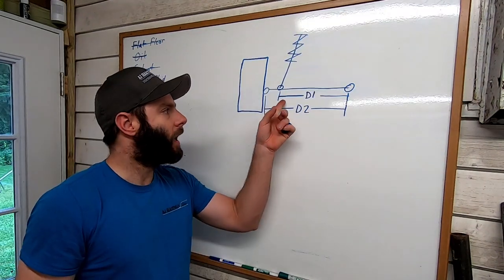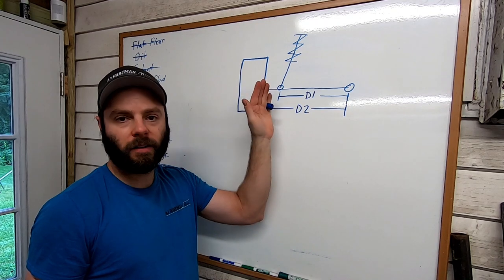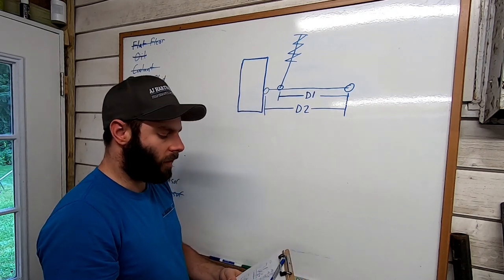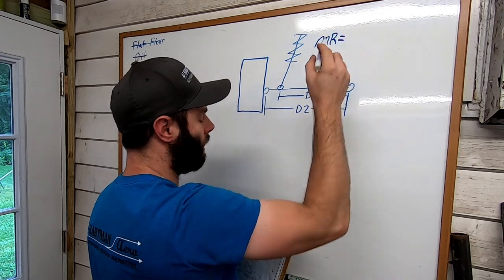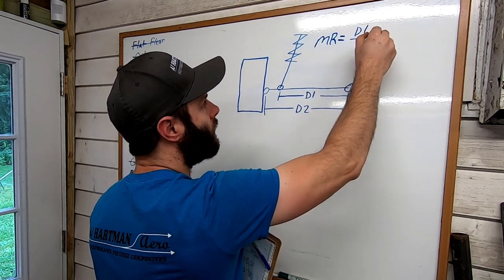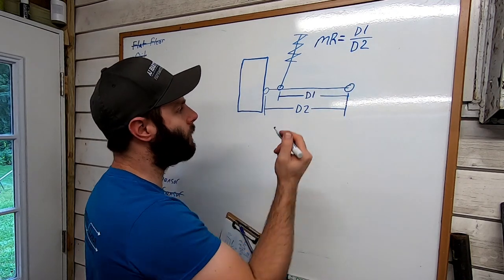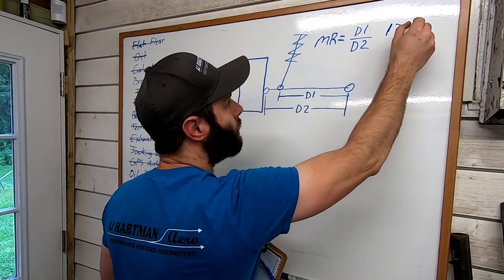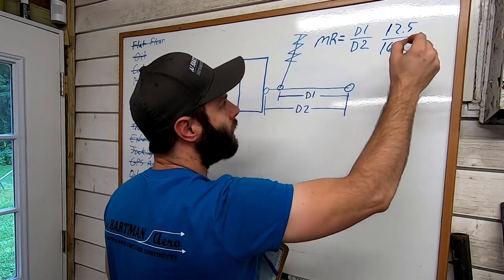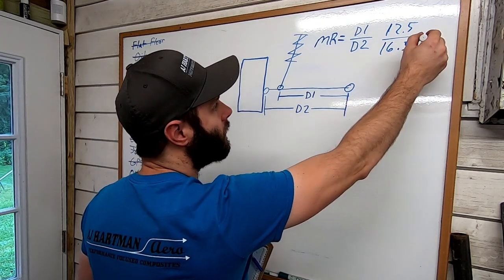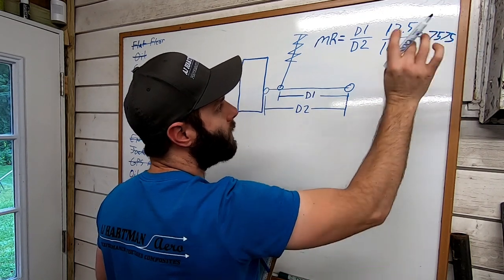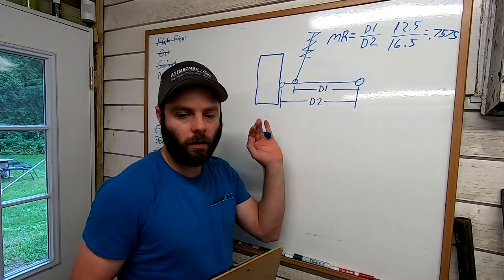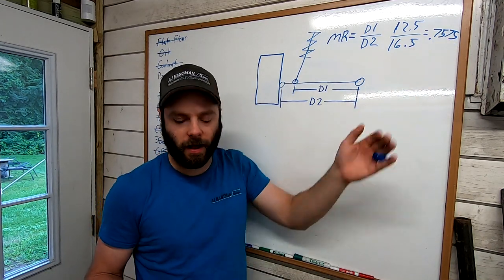All right, so here we have a drawing of an IRS suspension. Here's the inner pivot, here's your outer ball joint, and where the spring attaches. The equation for the motion ratio is D1 divided by D2. Pretty simple. In my case it is 12.5 divided by 16.5, so my motion ratio is 0.757, we'll say 0.758. So the motion ratio on my car is about 0.75.